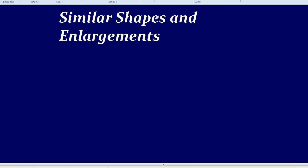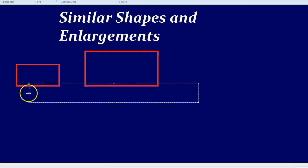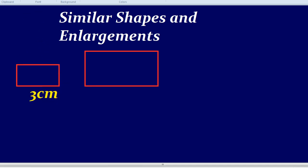Two similar shapes might look something like a rectangle like that and a rectangle like that. Same dimensions, just a bit bigger. And they'd give you some measurements as well. So let's say that is 3 centimeters long and 2 centimeters tall, for example.